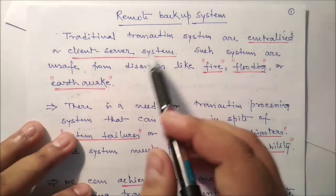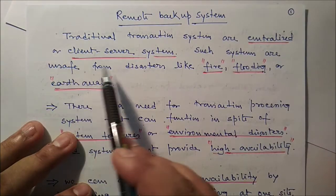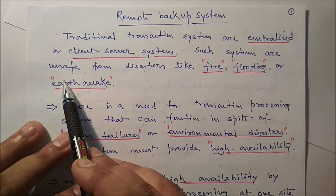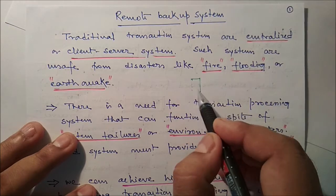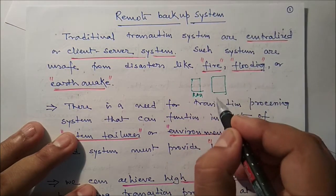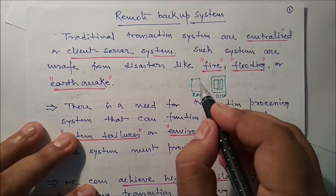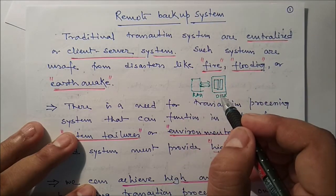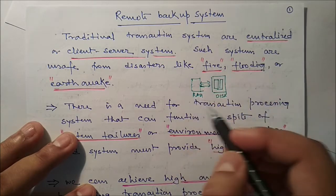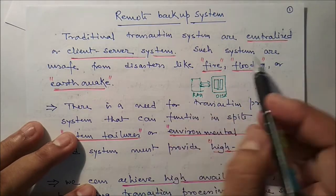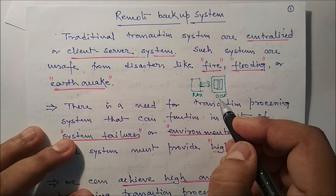Hello friends. In this video we will talk about remote backup systems. Traditional transaction systems are centralized or client-server systems. Such systems are unsafe for disasters like fire, flooding, or earthquake. The RAM, the primary, and the disk — data is kept in a same location, centralized or client-server. If they are present in the same location, they are unsafe from disasters like fire and flooding, and we may lose information.